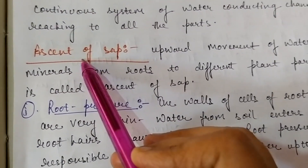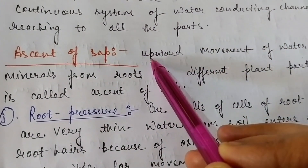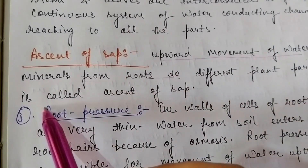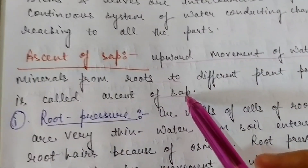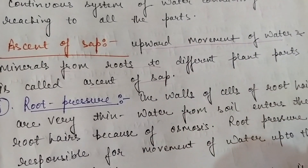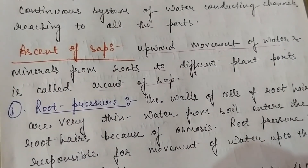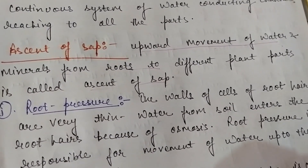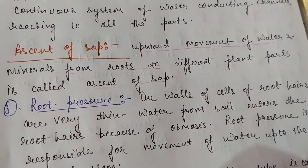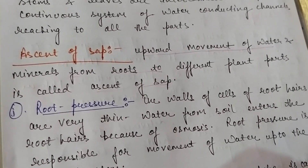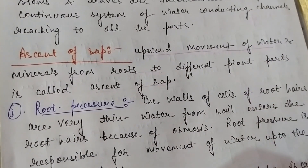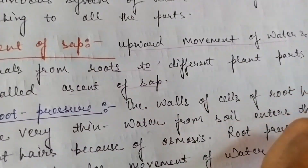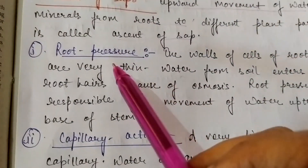Ascent of sap — the meaning of ascent of sap is the upward movement of water and minerals from roots to different parts of the plant. That is called ascent of sap. In this condition, upward movement of water occurs. Water normally goes down into the roots, and minerals also come from below, from the soil. When movement happens to different parts, we call it ascent of sap. This occurs due to several conditions.